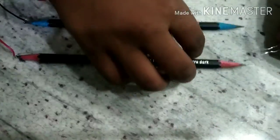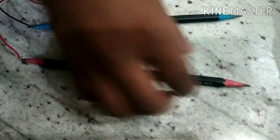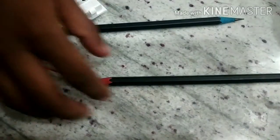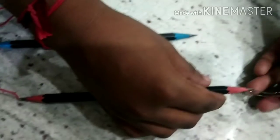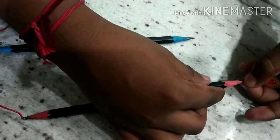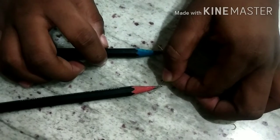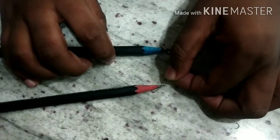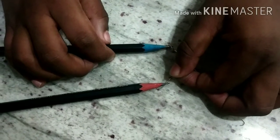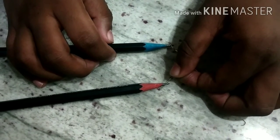Attach the positive terminal of the bulb to the positive wire pencil, and attach the negative pencil nib to the negative terminal. Now our graphite bulb is ready.